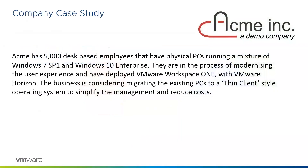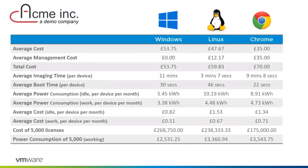Referring back to the case study: our hypothetical company has 5,000 users on Windows 7 and Windows 10 wanting to modernize, moving everyone to a thin-style OS, then using Workspace ONE and Horizon. All pricing was done using RRPs, so these aren't necessarily the prices you'd get — prices could have changed since April or September. For the Windows column, we took the price for the Dell and ThinScale solutions, added them together, and divided by two to get an average.